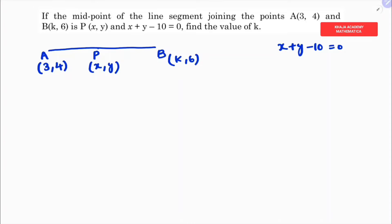We need to find the value of k. Using the midpoint formula, P is the midpoint, so the formula is (x₁ + x₂)/2 and (y₁ + y₂)/2.